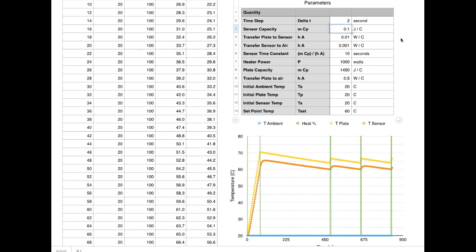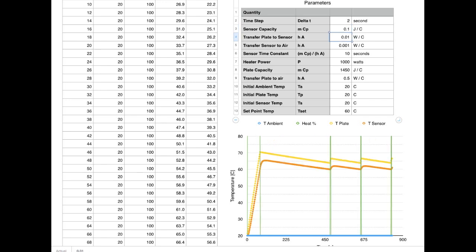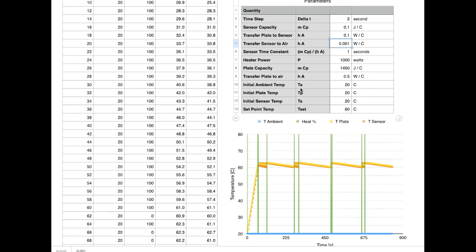Changing other parameters will change how the system responds. So if the sensor was heavier, say 0.5 instead of 0.1, it would respond much more slowly and things go off the graph. If I switch that back to 0.1 and make the transfer from the plate to the sensor much more effective, then I see that the sensor temperature follows the plate temperature much more closely. They're much closer together.